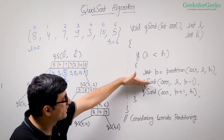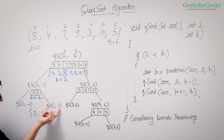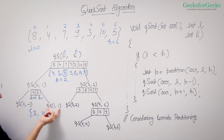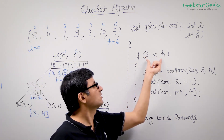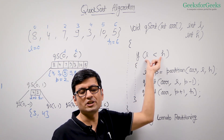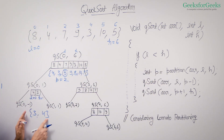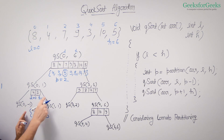Now that the left sub-call has finished, the call for indices 0 to 1 proceeds to call P plus 1, which is 1, to H, which is also 1. When you call for 1 to 1, there is only one element, so L is not smaller than H. No changes are made and your left part remains sorted as 3, 4.